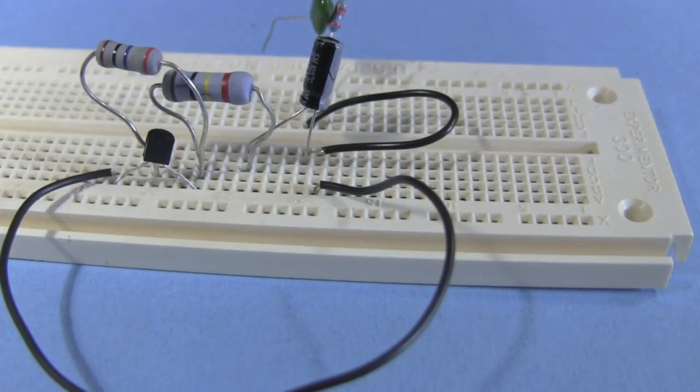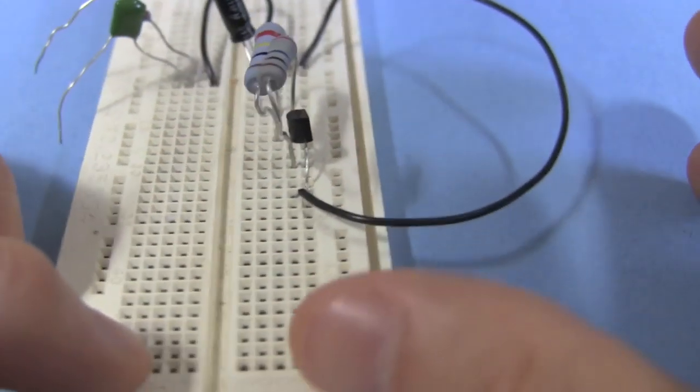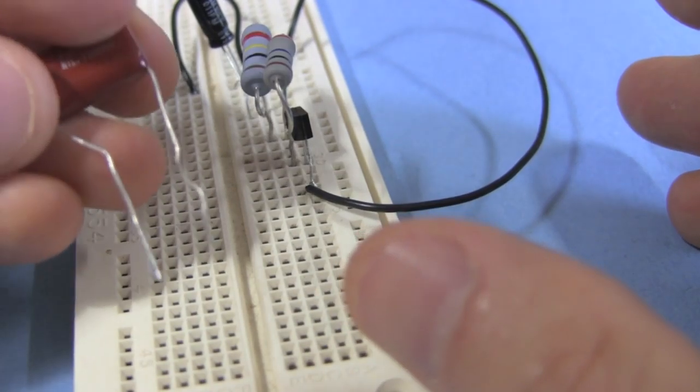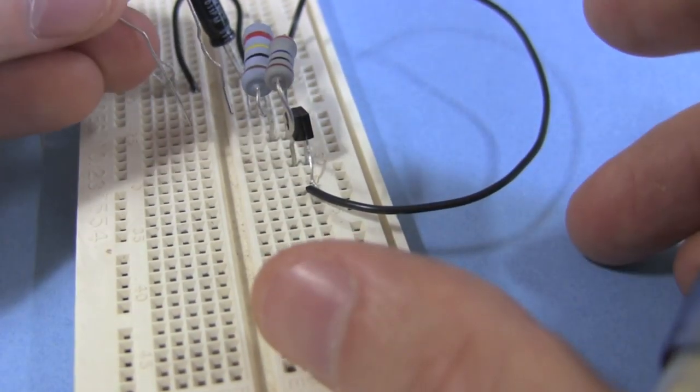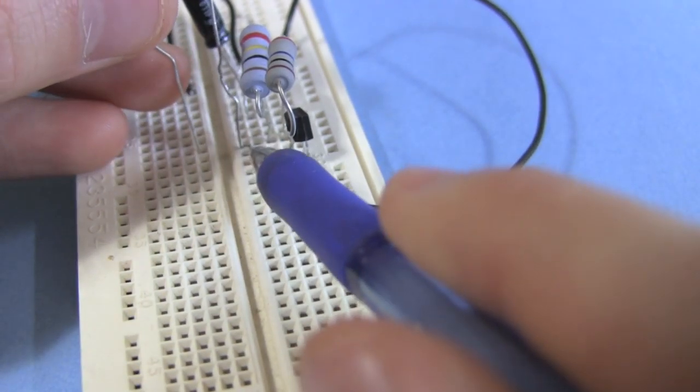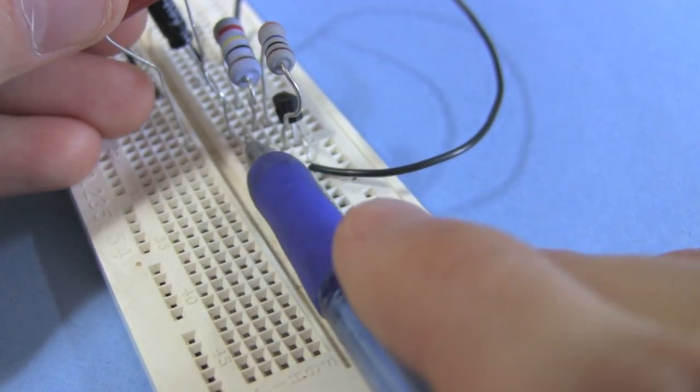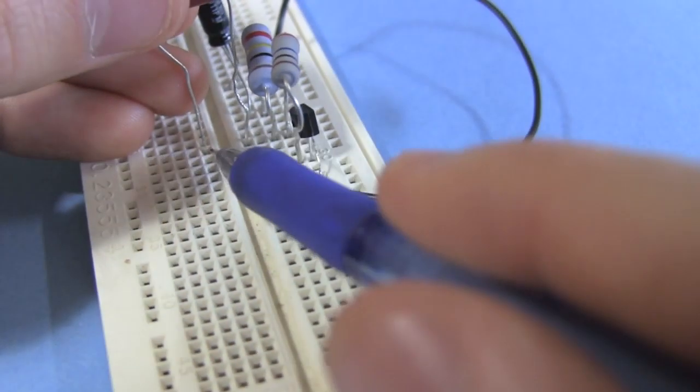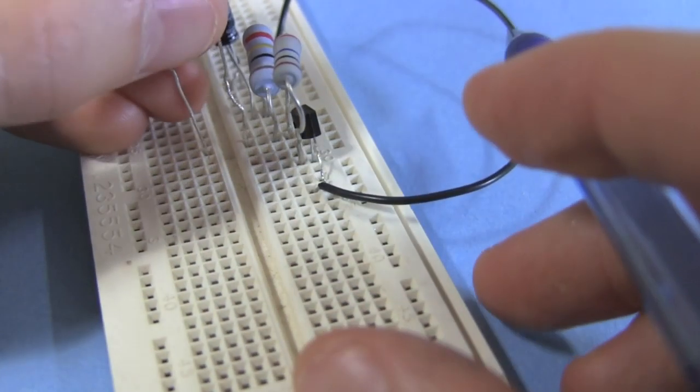Next up are our 1 microfarad capacitors. And I've just scrunched them up like this. And one of them, one of the legs, goes in a row where you have the two resistors have a common connections here. And the other leg just goes on the other side over here in another row.